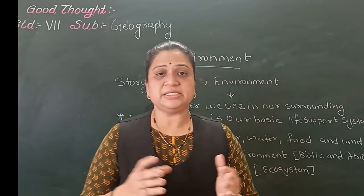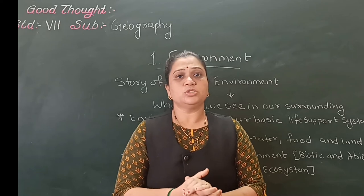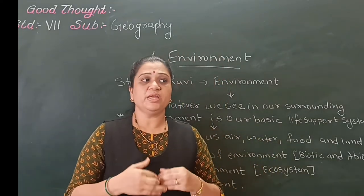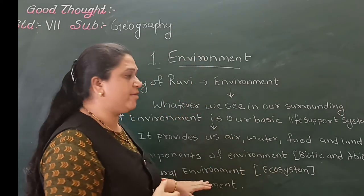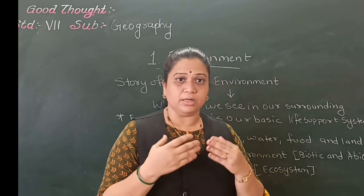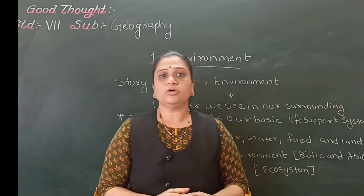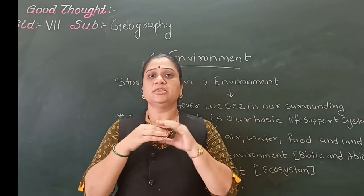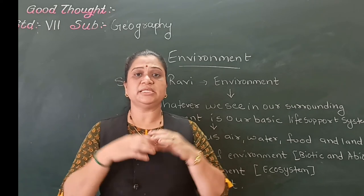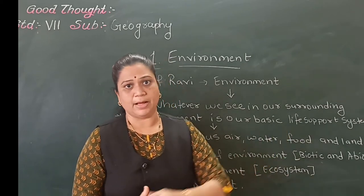Whatever things we see in our environment are not only natural, but there are also human-made resources. So in this human and natural environment, we are going to study about the things which are made by humans, and in the natural environment, we will study about the ecosystem which we get from nature — how things, whether living or non-living, are interdependent on each other. In short, whatever things you see in your surrounding make your environment, and the components of environment are biotic and abiotic components.